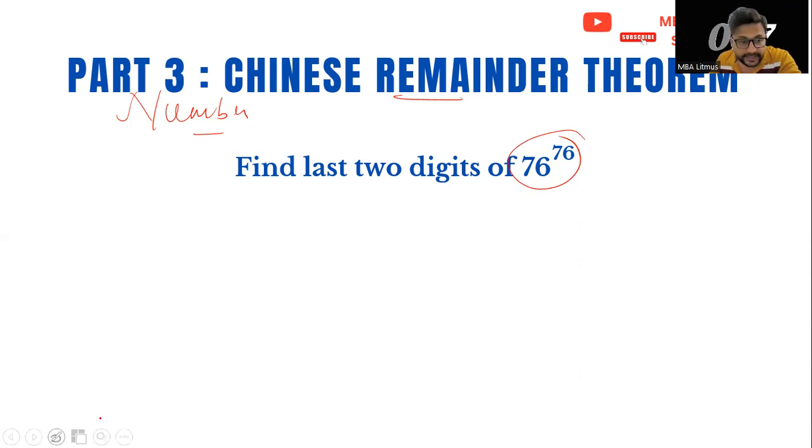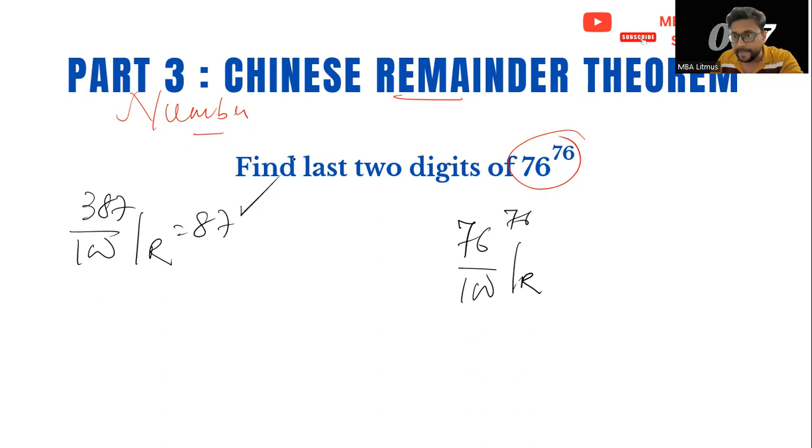Let's figure out how it works. In this example, if you see 76 to the power 76, if I divide by 100 and take the remainder, it will give me the last two digits. For example, 387 divided by 100 gives remainder 87. Similarly, 4096 divided by 100 gives 96. So I can write this question in this form.